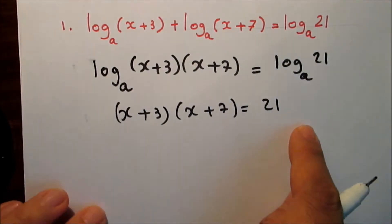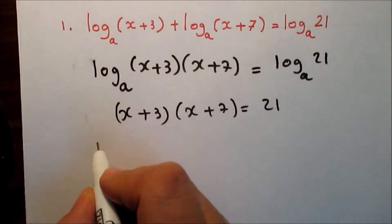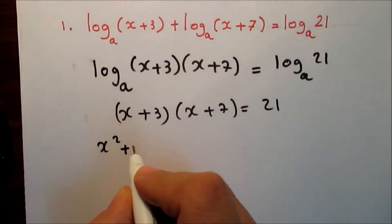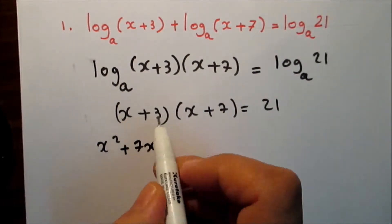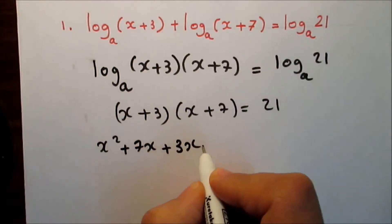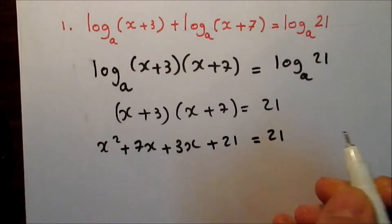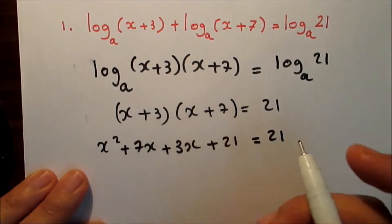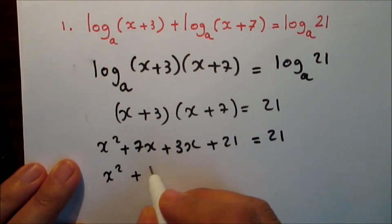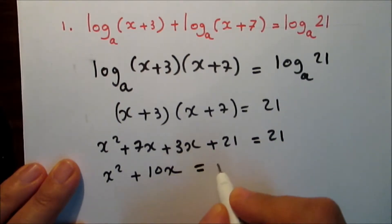Now we have a simple equation we can solve to get x. Expanding the product of two binomials: x times x is x squared, x times 7 is 7x, 3 times x is 3x, and 3 times 7 is 21. This equals 21. Move the 21 to the left-hand side, so x squared plus 10x plus 21 minus 21 equals 0, giving x squared plus 10x equals 0.